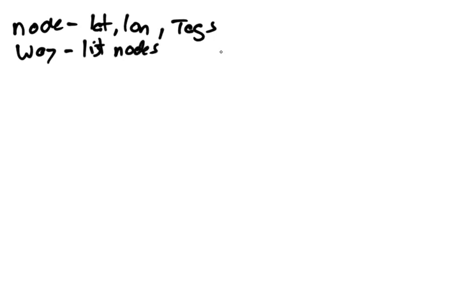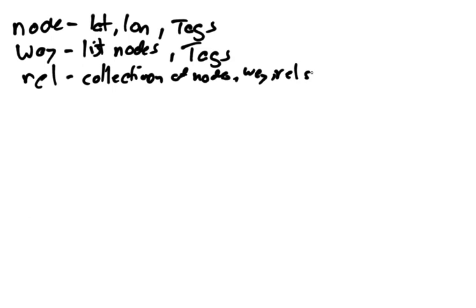In the previous videos, we talked about nodes and ways and relations, and let's just revisit that a little bit first. So we said that a node was a set of coordinates, so it's a latitude and longitude, along with a set of tags. And we said that a way was an ordered list of nodes and some tags. We said that a relation was a collection of nodes, ways, and rels, along with some tags.